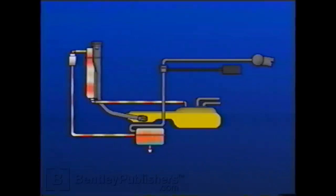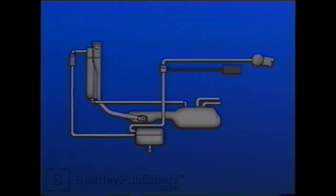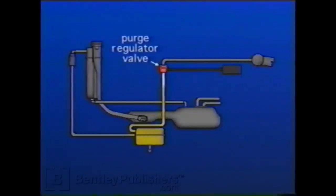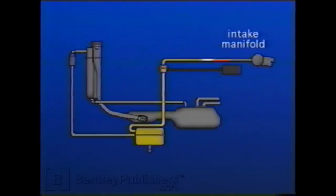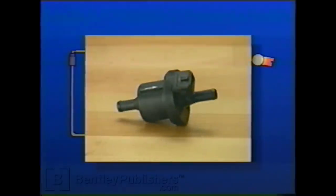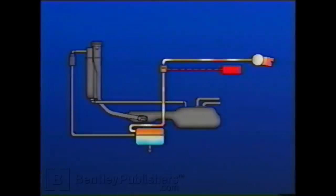The EVAP canister absorbs fuel vapor by simply passing it through activated carbon. However, the EVAP canister does not have unlimited storage. The EVAP canister has a vent line that runs to the EVAP canister purge regulator valve. From here, the fuel vapor is routed to the intake manifold and into the engine to be burned during normal combustion. The EVAP canister purge regulator valve is an electromagnetic solenoid valve that can be pulsed to allow a variable percentage of fuel vapor to enter the intake manifold. The ECM controls this valve.